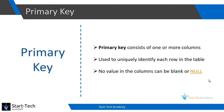A primary key is a field or a collection of fields in one table that uniquely identifies a row of that table. You must have an employment ID or student roll number for your organization or school. Such numbers uniquely identify you in your organization or school. Similarly, each row in a table can be identified uniquely by using a primary key.